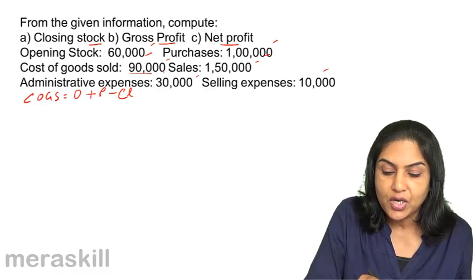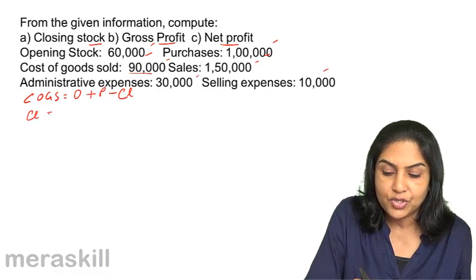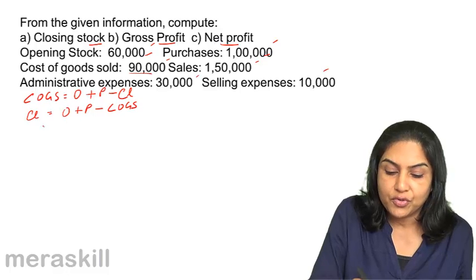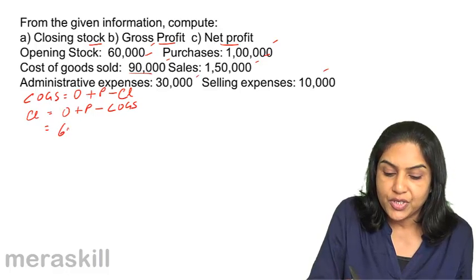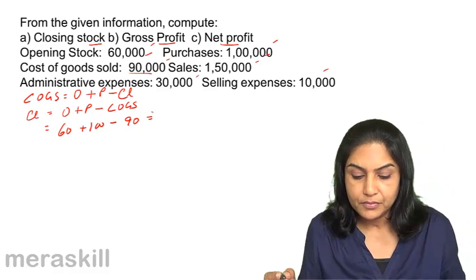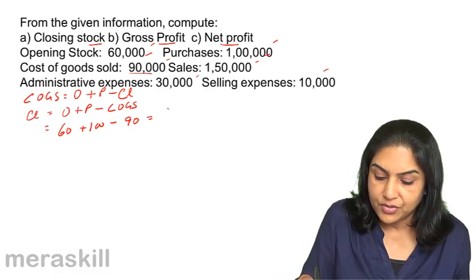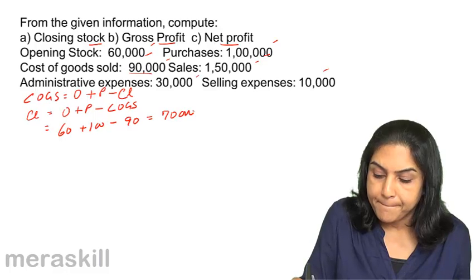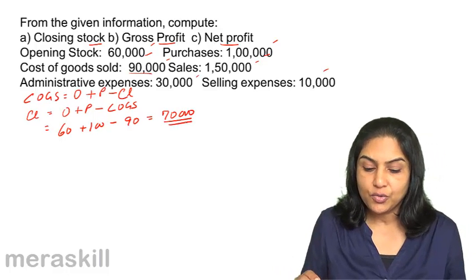What is the closing stock? Closing stock will be equal to — bringing closing stock to this side — opening stock plus purchases minus cost of goods sold, which is equal to 60,000 plus 1,00,000 minus 90,000, equal to 70,000. So, 70,000 is the closing stock.